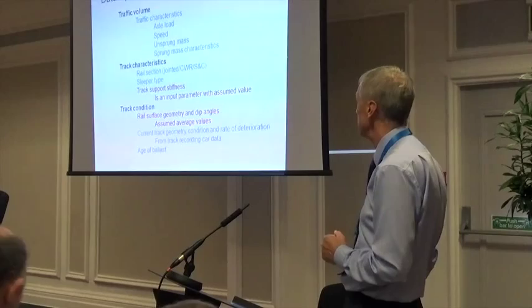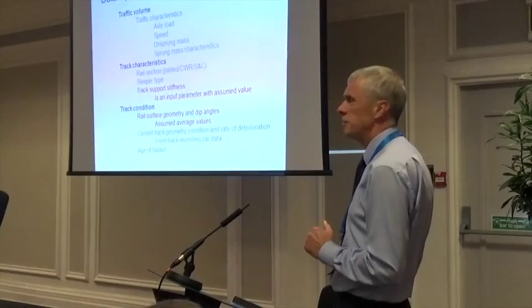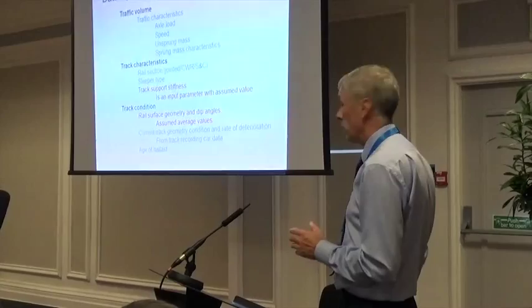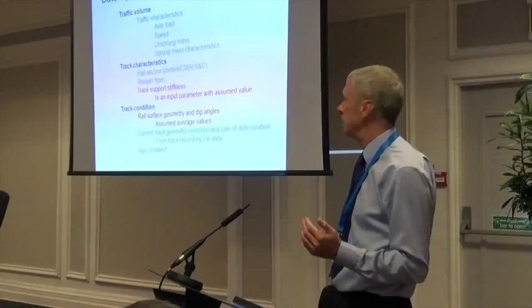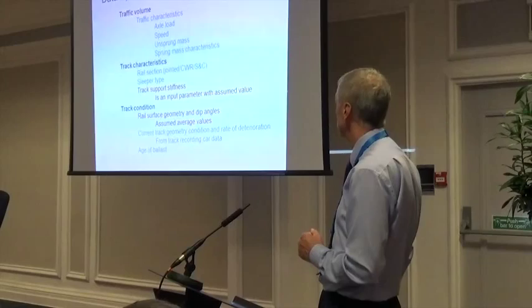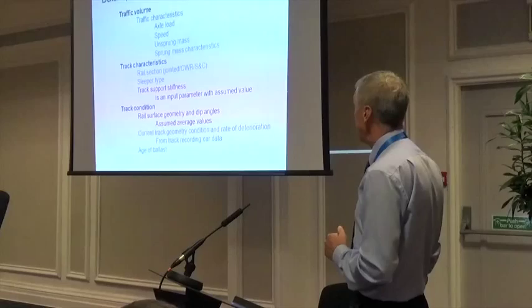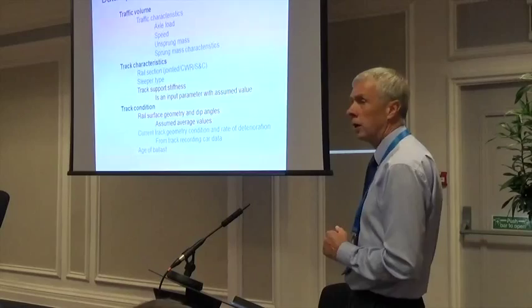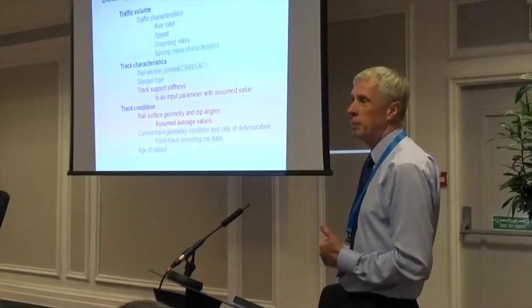Another thing we don't know is the rail surface geometry — dip angles caused by welding, joints, wheel burns, all that sort of thing. Across the whole network we don't know what that input is, and that drives the dynamic loading. We can quantify the current track geometry condition and rate of deterioration from track recording car data, and that's what we attempt to do. In principle we know the age of ballast because it's documented, although there are some reliability issues with that data.